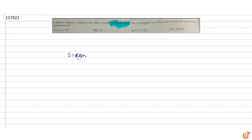The question given is: how many ways can the word STRANGE be arranged so that the vowels are never separated? So the word is S-T-R-A-N-G-E. Total letters: 1, 2, 3, 4, 5, 6, 7 — we have 7 letters in total.